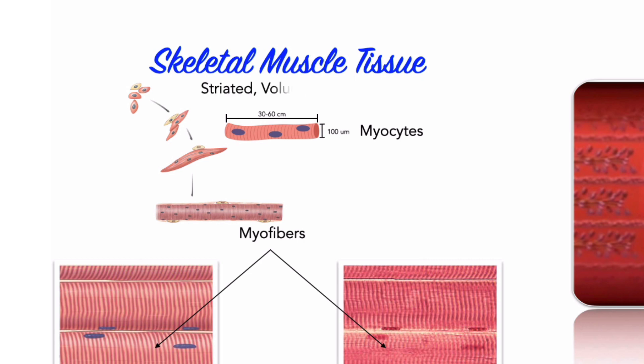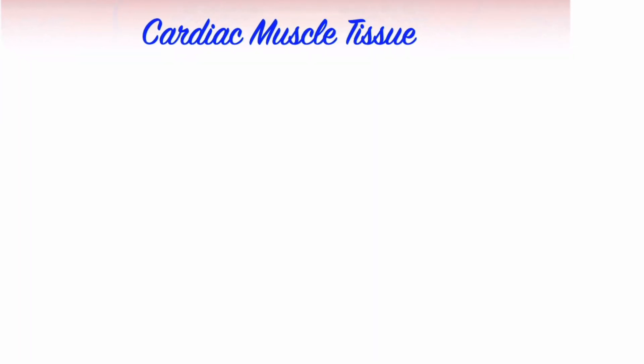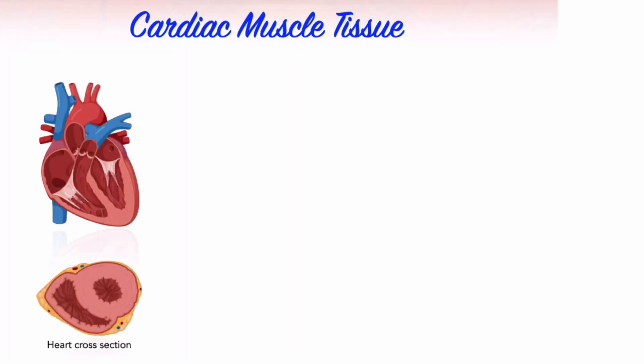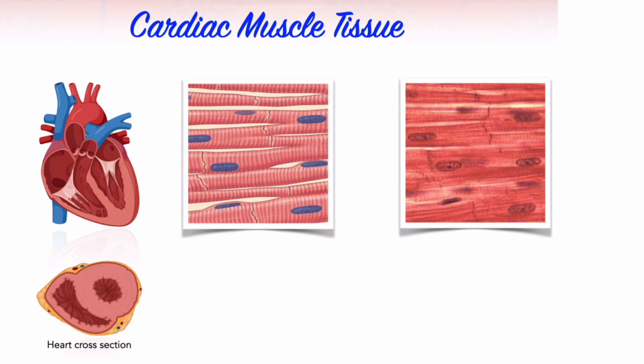The heart contains an abundance of muscle tissue called cardiac muscle tissue. Similar to skeletal muscle tissue, the arrangement of myosin and actin filaments gives the cardiac muscle tissue a striated appearance.